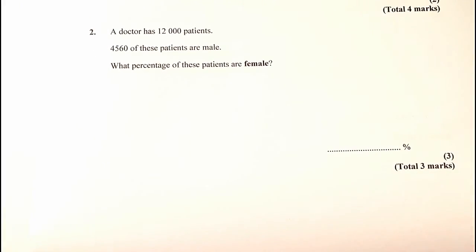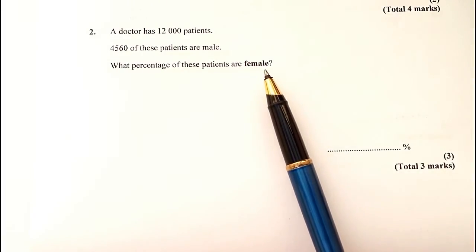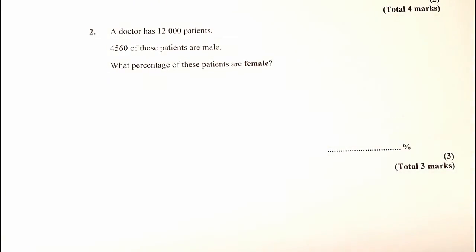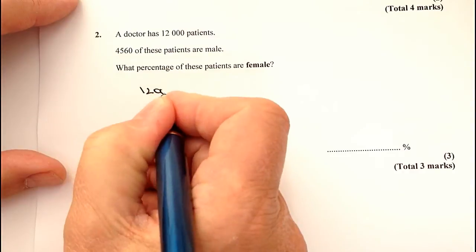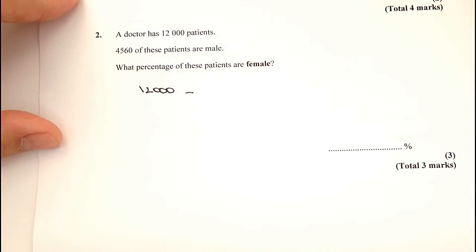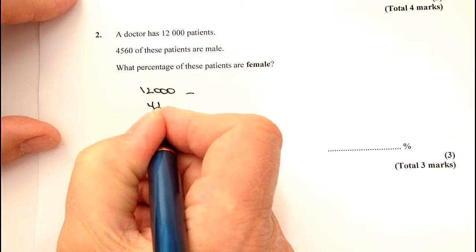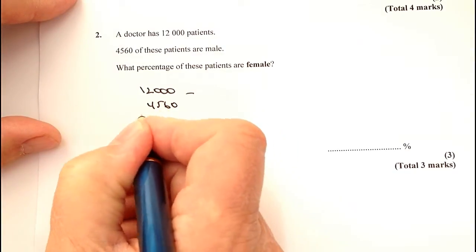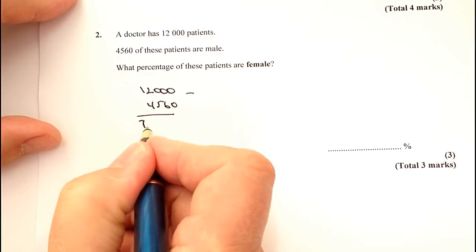On to question two. A doctor has 12,000 patients — that's a lot of patients. 4,560 of these patients are male. What percentage of these patients are female? Always look out for bold text — they're giving you a bit of a clue. In other words, we have to work out, firstly, actually how many female patients there are. Female patients will be 12,000 altogether, but we're going to take away the male patients, which is 4,560. If we take one away from the other, I'm going to get 7,440.